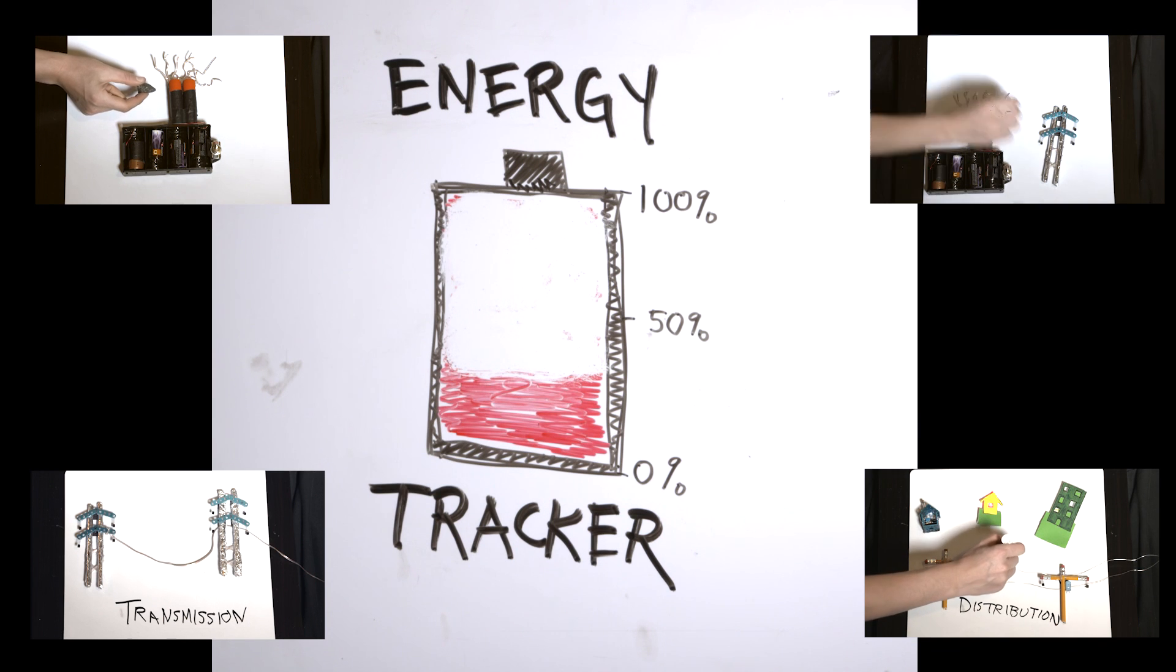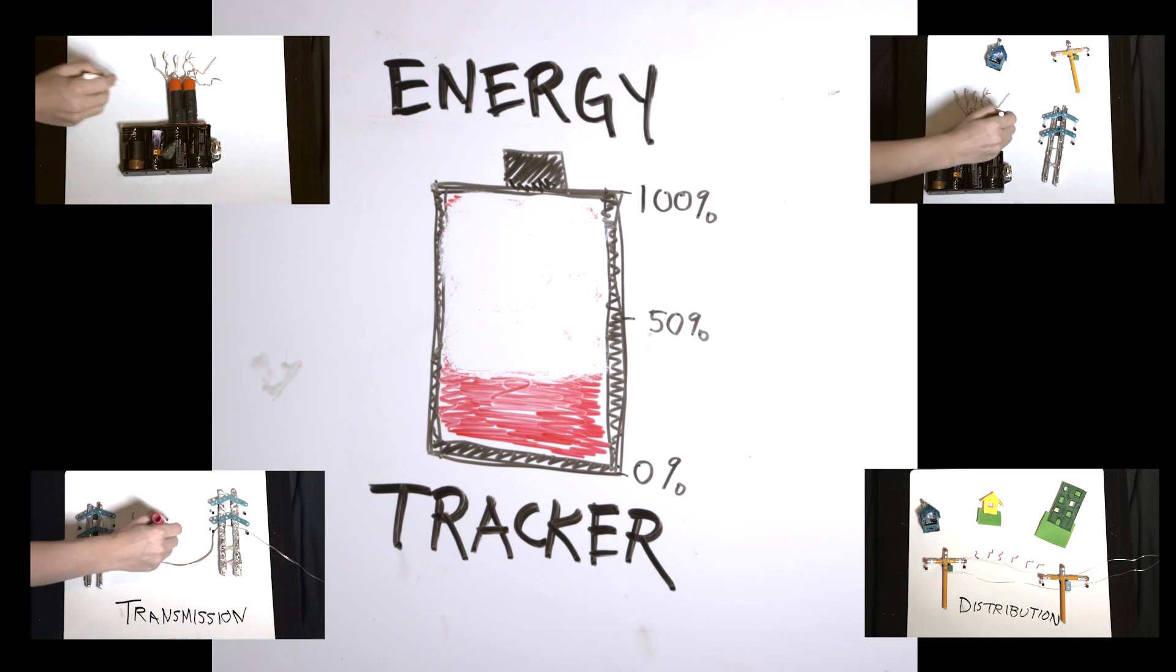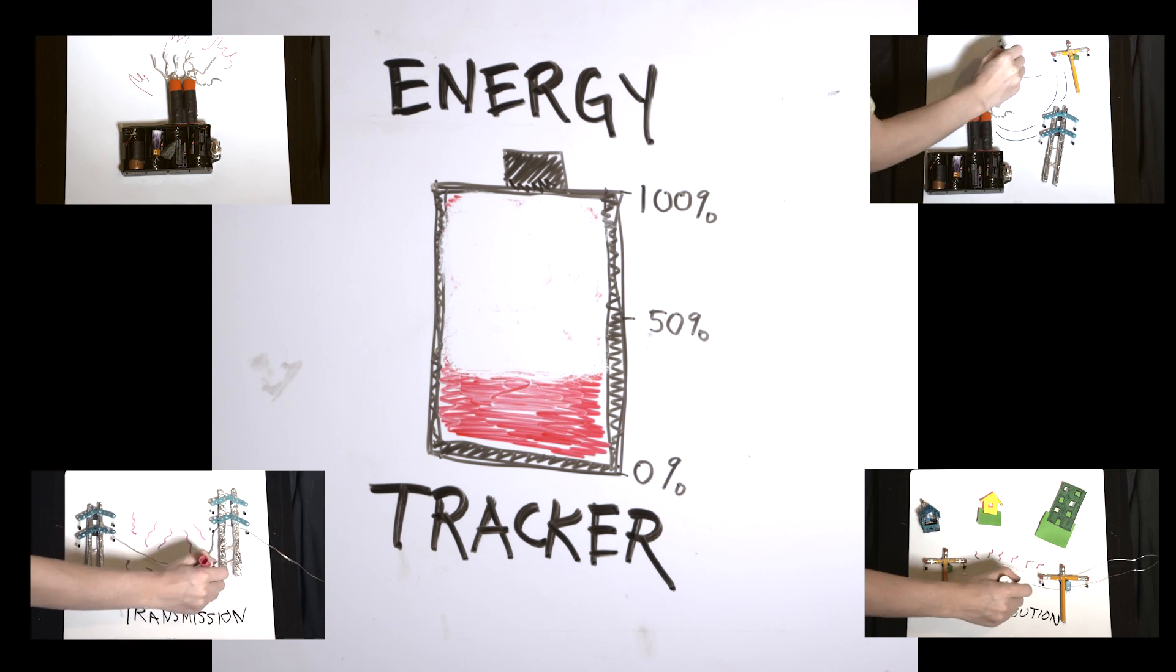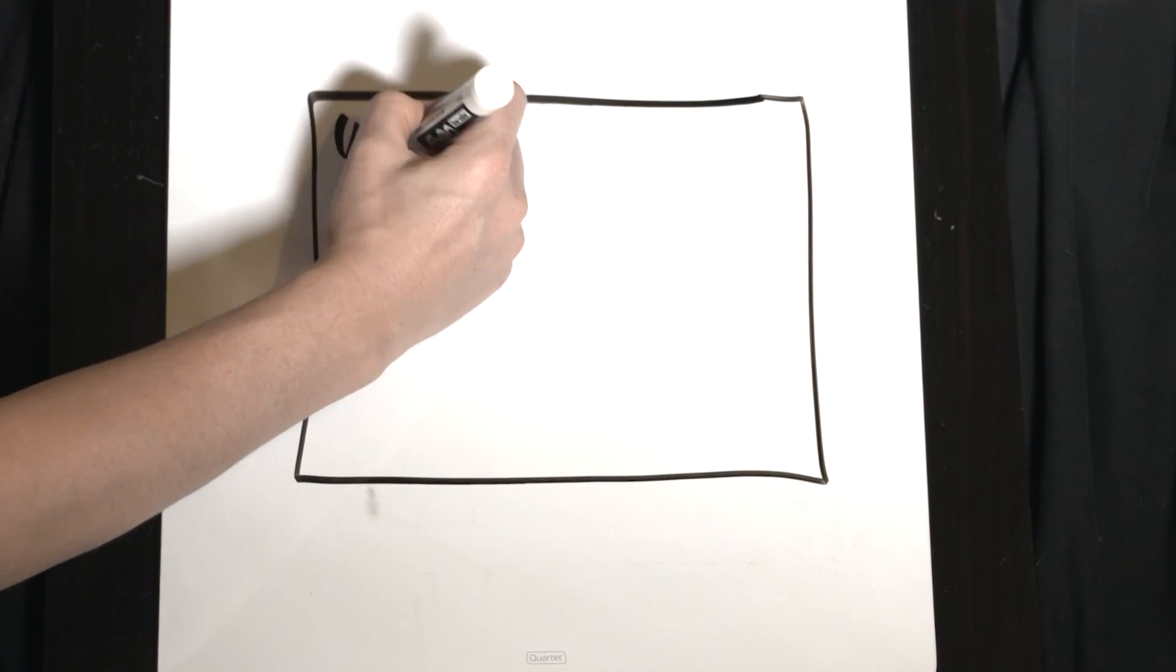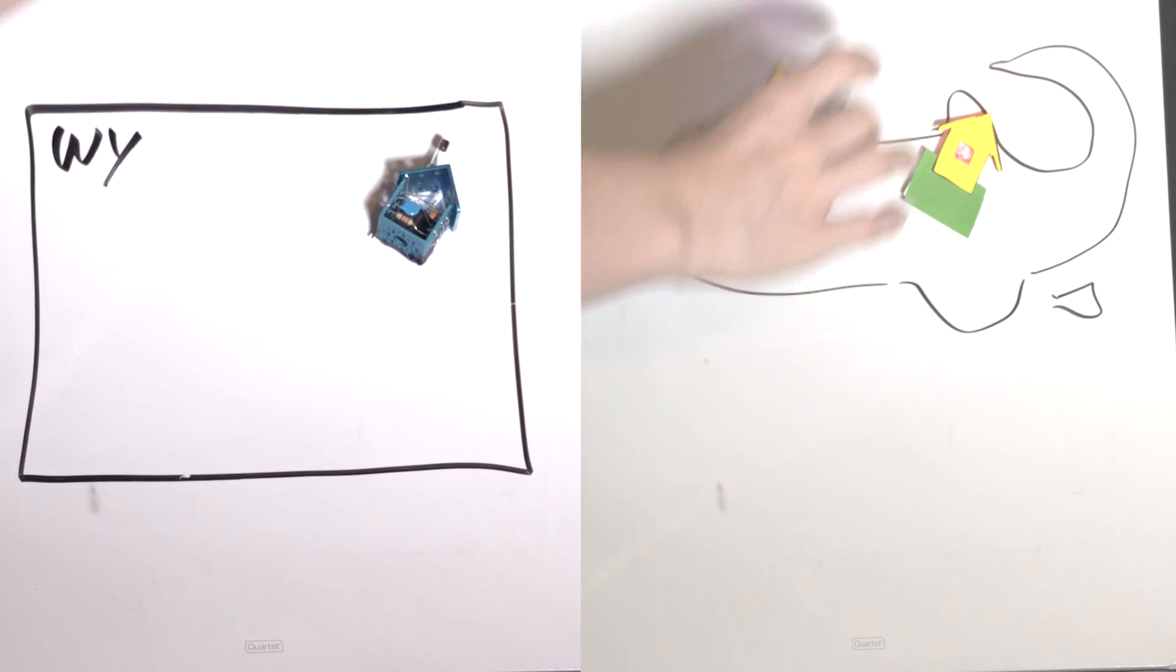So by the time it reaches your house, 5 or 6% of electricity has literally flown away as heat. But in rural states, where people are spread out, like Wyoming, we lose way less. Here's why.